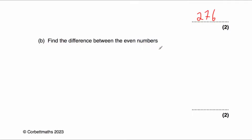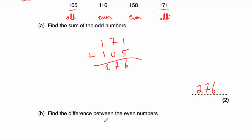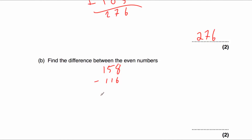Part B says: find the difference between the even numbers. The even numbers are 158 and 116. To find the difference, we take them away: 158 take away 116. 8 take away 6 is 2, 5 take away 1 is 4, and 1 take away 1 is 0, so the answer is 42. The difference between the even numbers in that list is 42.